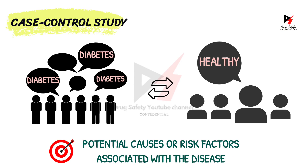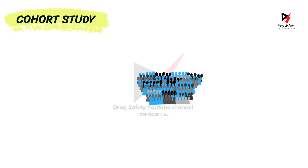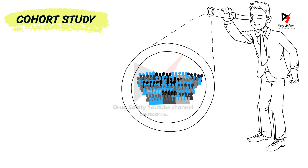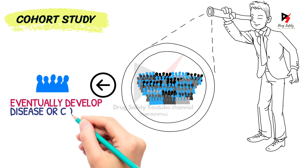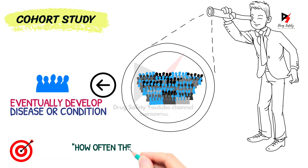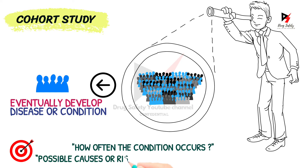The last type of observational study is cohort study. In this study, a large group of people is observed over time. Some people eventually develop a disease or condition. These studies can help to learn how often a condition occurs and also help to find possible causes or risk factors of a particular disease.